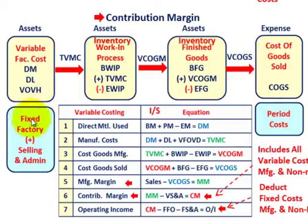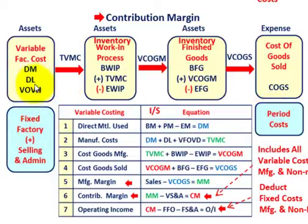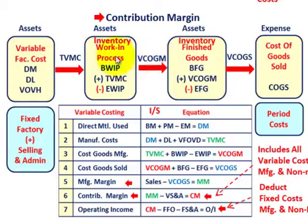The period costs not included in COGS under contribution margin are: the fixed factory overhead, plus all selling and administrative expenses. So compared to gross margin — where all non-manufacturing costs were period costs — with contribution margin we also exclude fixed factory overhead from COGS. Only the variable factory overhead goes into cost of goods sold; the fixed factory overhead is expensed separately.